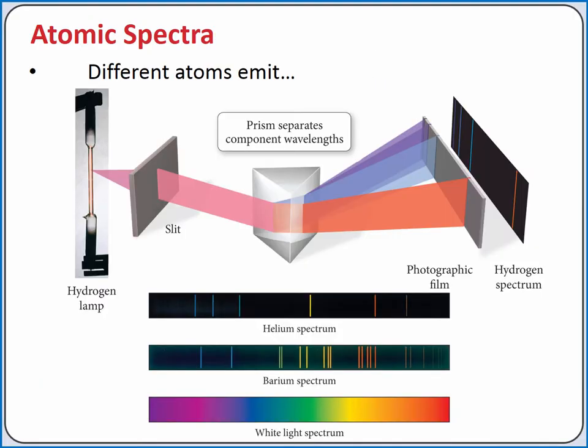Different atoms emit different wavelengths of light. For example, if you pass the light from a hydrogen lamp through a slit and a prism, the light will be divided into its component wavelengths. The result is called an atomic spectrum.